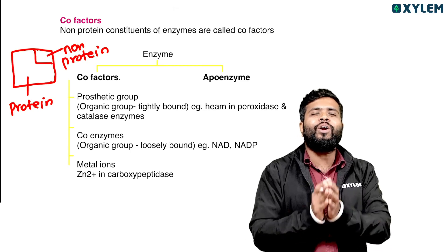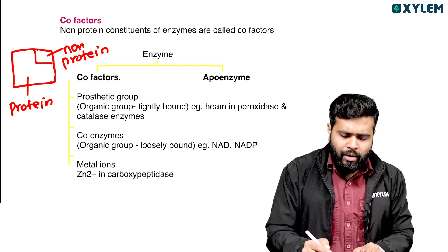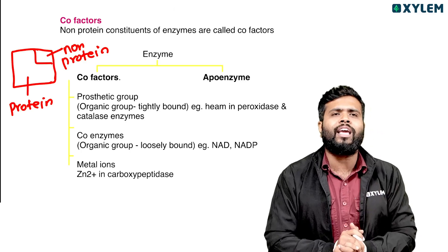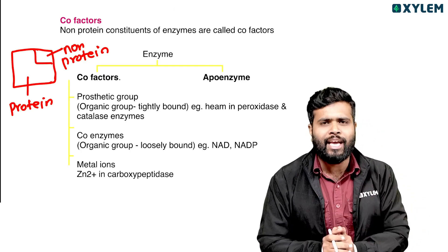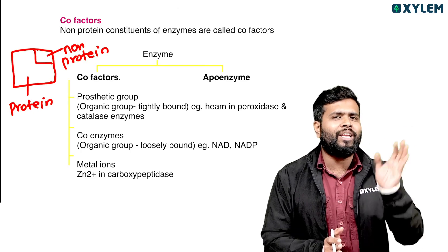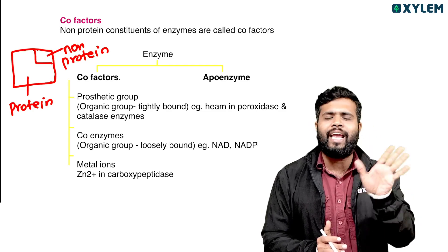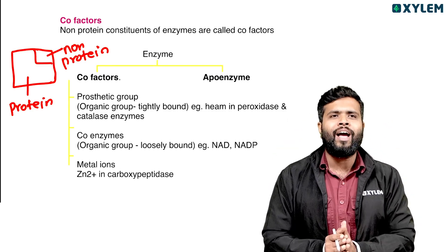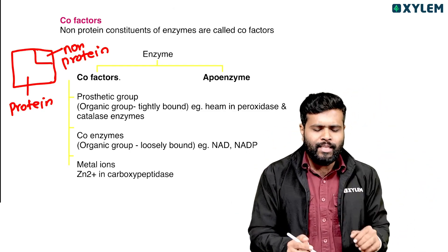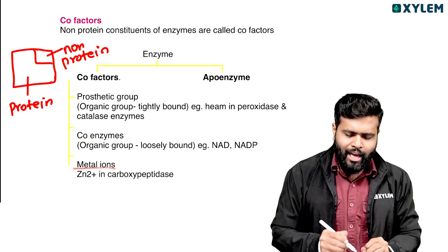The protein portion is called the Apo-enzyme. The non-protein portion is the co-factor. There are three types of co-factors: one is the prosthetic group, two is the co-enzymes, three is the metal ions.